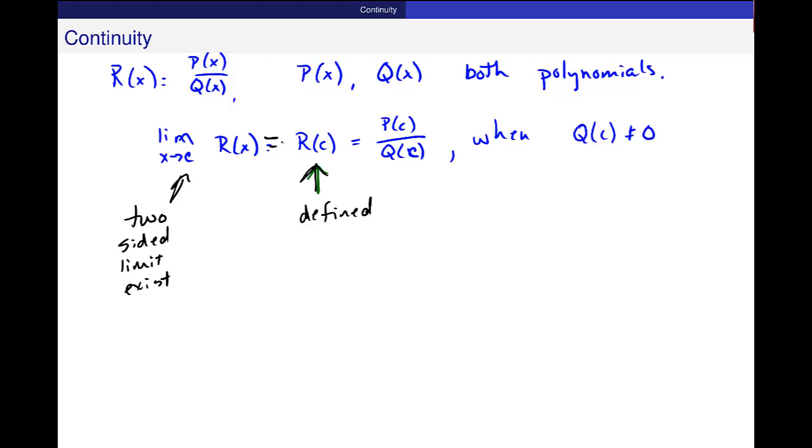And here it says, guess what? They're equal. And that's the exact definition of continuity. That happens everywhere except where q(c) is equal to 0.